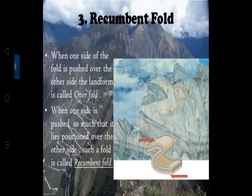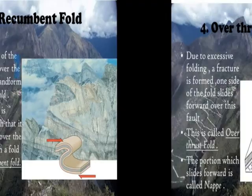Recumbent fold - when one side of the fold is pushed over the other side of the landform, it is called an over fold. When one side is pushed so much that it lies positioned over the other side, such a fold is called a recumbent fold. The axial plane is almost horizontal and one limb lies over the other in the horizontal direction.